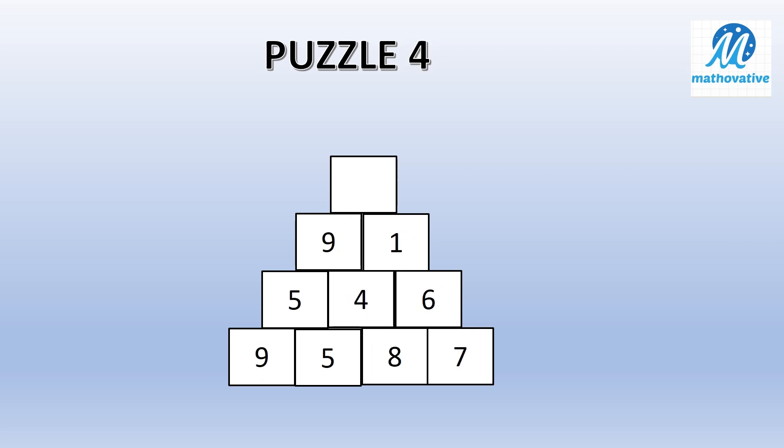This puzzle is something different. Here also we are doing the addition, but how? Just see. 8 plus 7? 15. But here at the place of 15 it is written 6. So how? They are adding the digits of the sum. Correct.